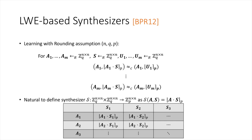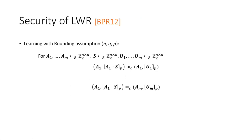There is a slight domain mismatch—the synthesizer takes square matrices from Z_Q and maps them to square matrices in Z_P—but this is a minor technicality that can be fixed in multiple ways, as detailed in the paper. So we now know: first, a secure pseudorandom synthesizer gives a low-depth PRF; and second, the LWR assumption gives a secure synthesizer. The remaining question is whether the LWR assumption holds assuming LWE.